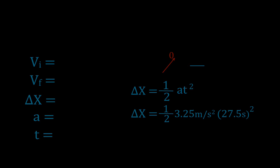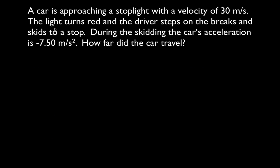Let's read the next problem. A car is approaching a stoplight traveling at 30 meters per second. The stoplight turns red, the driver steps on the brakes, the car skids to a stop with an acceleration of minus 7.5 meters per second squared. It's negative because the acceleration is in the opposite direction of motion — it's slowing down. We want to know how far does the car travel. The first thing: write down all five variables, then fill in what you know and what you don't know.